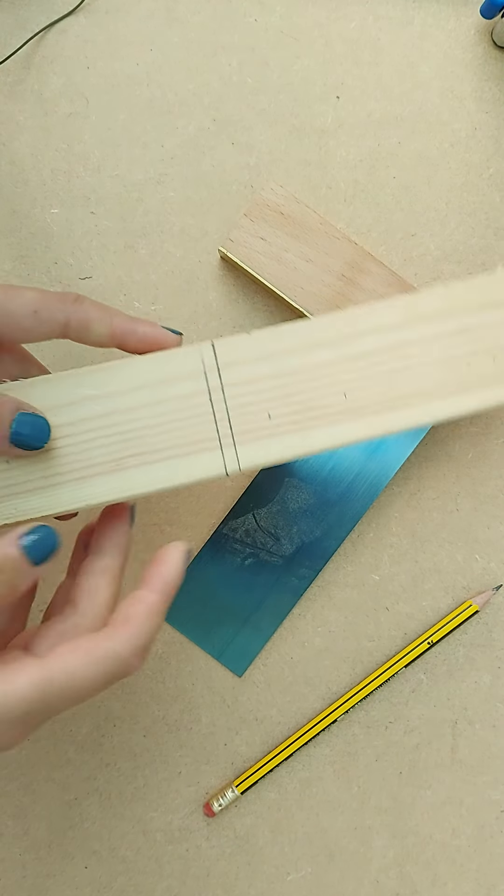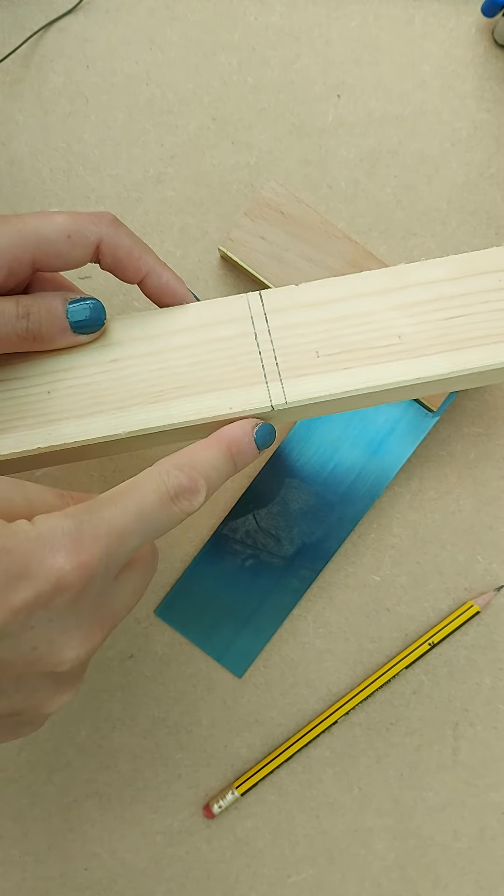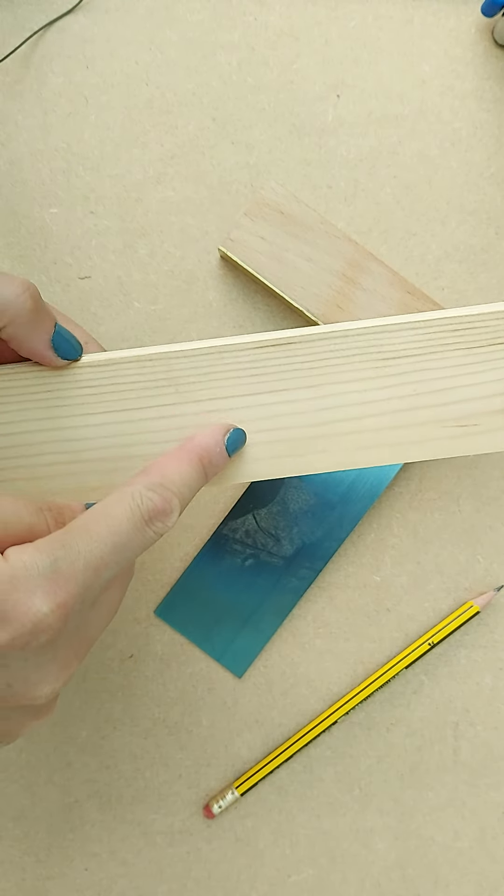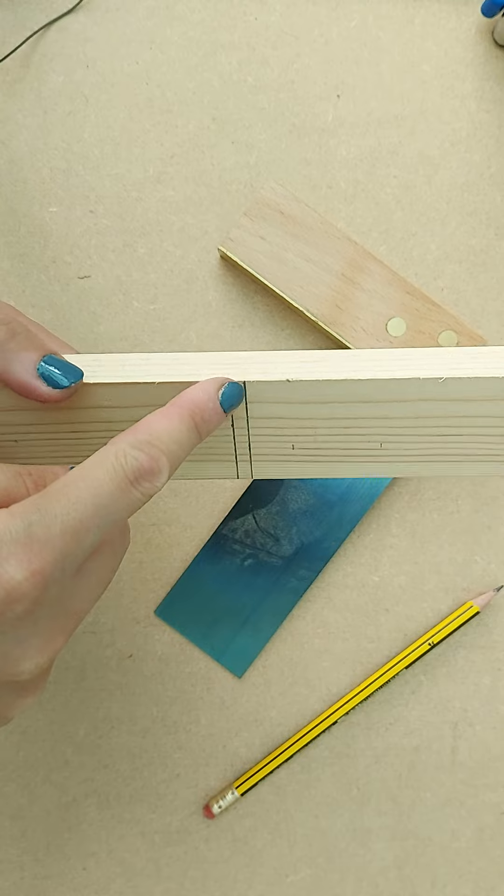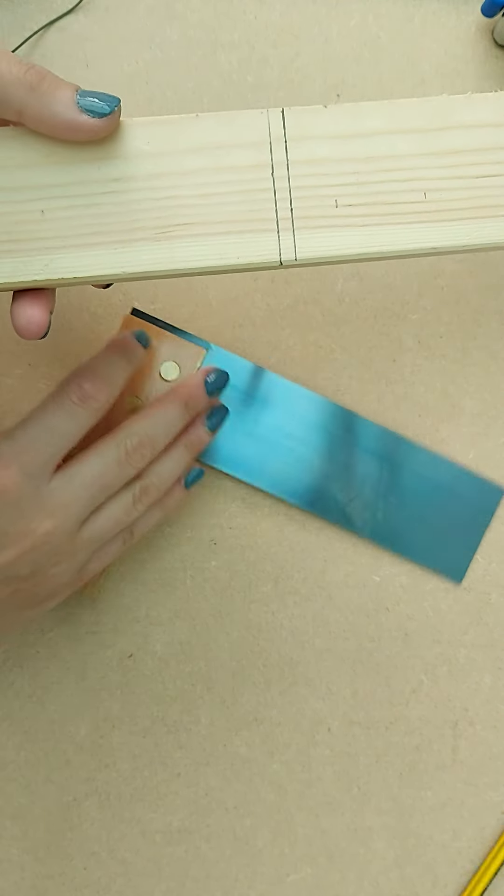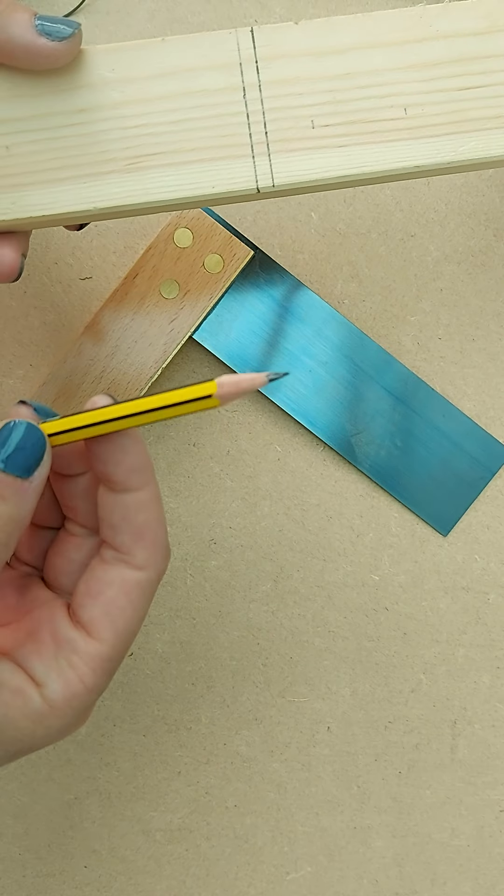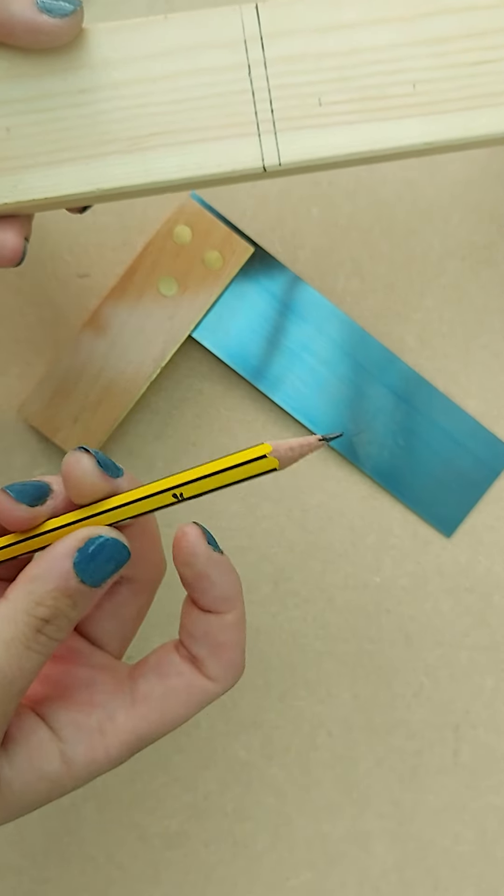In this video I'm going to show you how to take your marked lines and run them all the way around your material so you know exactly where you're working and what you're cutting. You will need a tri square and a sharp pencil - no blunt pencils please. If you need to sharpen it, please do.